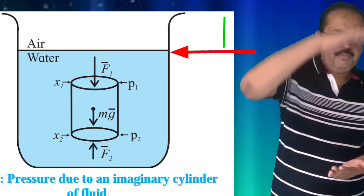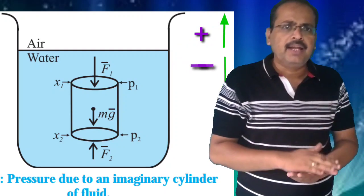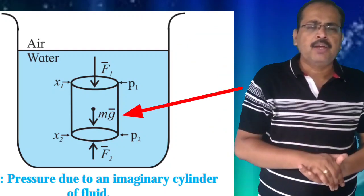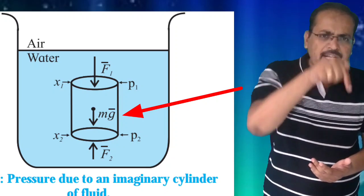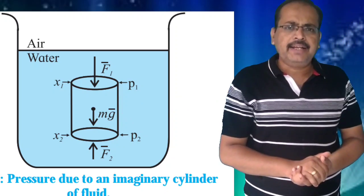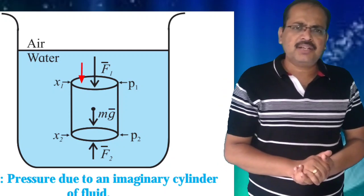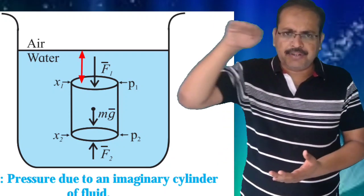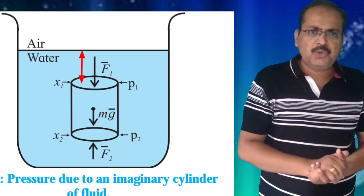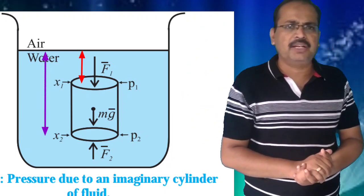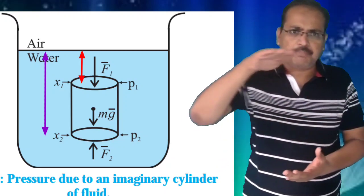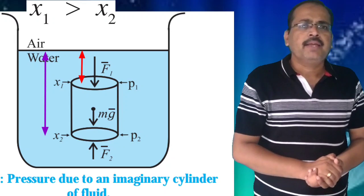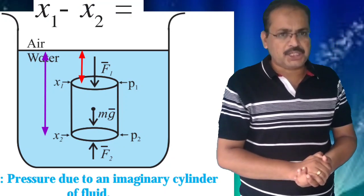The reference point: values above it are positive and below are negative. Let us consider a cylinder of area A placed inside a liquid, below the liquid surface. Let X1 be the distance of the upper surface of this cylinder from the liquid surface, and let X2 be the distance of the lower surface of the cylinder from the liquid surface. X1 is greater than X2, therefore X1 minus X2 is equal to H.